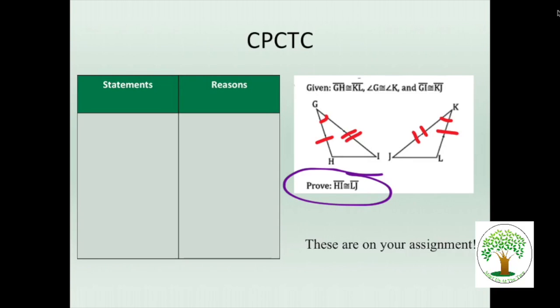GH is congruent to KL. Angle G is congruent to angle K. And GI is congruent to KJ. I'll wait for everybody to mark up. How are these triangles congruent? Side angle side. And I'm going to write underneath as like a little bit of a plan. I'm going to write side, angle, side. Is there anything I need to write in purple that I need to get congruent? No. Everything is in the given right now.